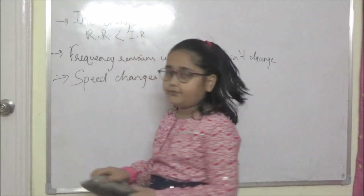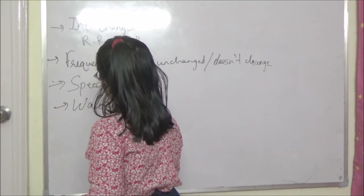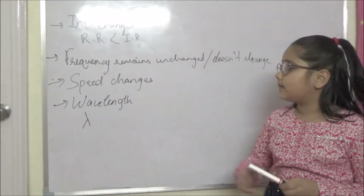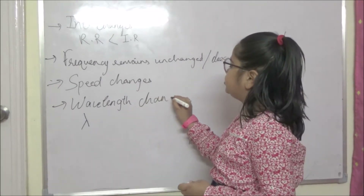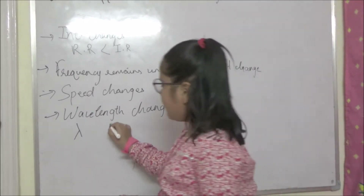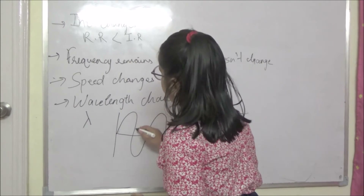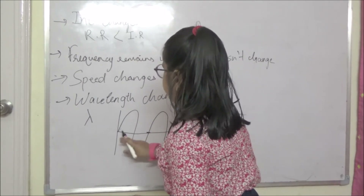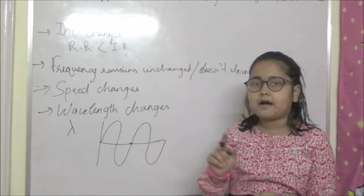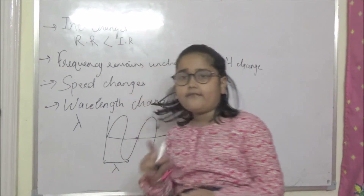Friends, now let's talk about the fourth factor — last but not the least — wavelength. Wavelength is represented by the symbol lambda. The wavelength also changes during refraction. Light travels in transverse waves. This is my transverse wave: a full wave goes from here to here — this part is the crest and this part is the trough. The length of one full wave is called the wavelength.